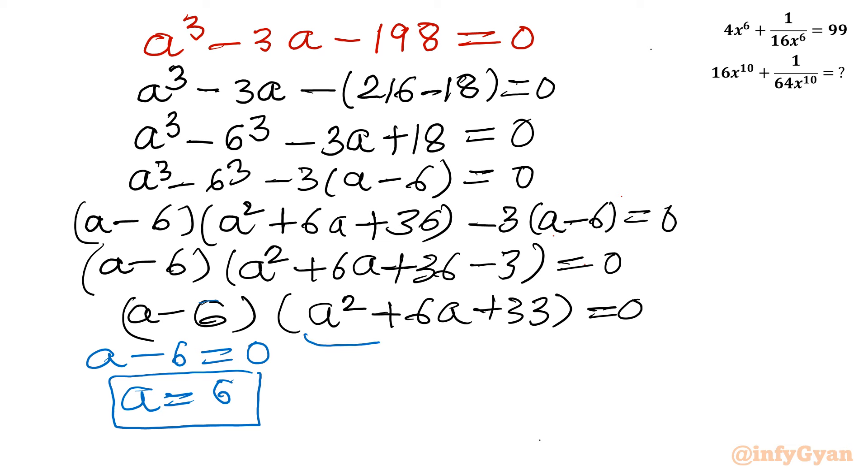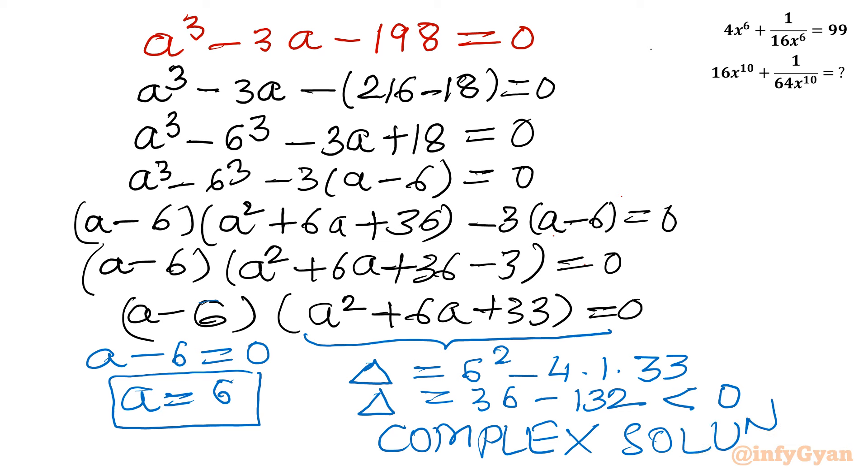Now for the second quadratic equation, I will only calculate the discriminant. Delta will be 6^2 minus 4 times 1 times 33, which is 36 minus 132, so it is minus 96. The ultimate point is this is negative. Once the discriminant is negative, complex solutions will generate. So I will reject this quadratic equation for our real solutions. The accepted solution is A equals 6.